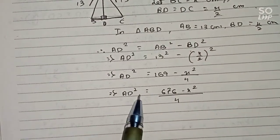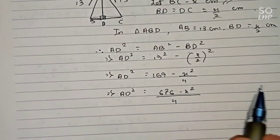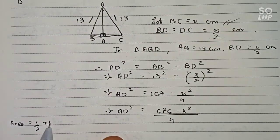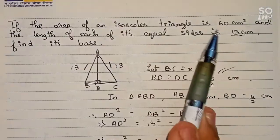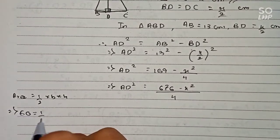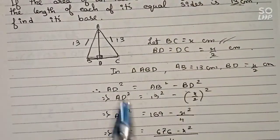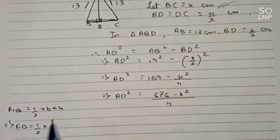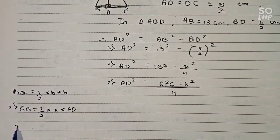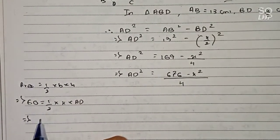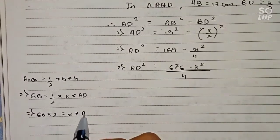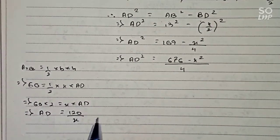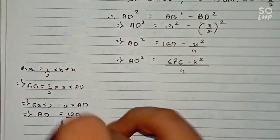The formula for the area of a triangle is: Area = ½ × base × height. The area is given as 60 cm². So 60 = ½ × x × AD. Multiplying both sides by 2: 120 = x × AD. Therefore AD = 120/x.